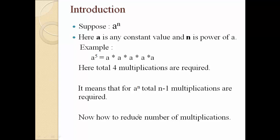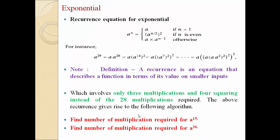But now, how can we reduce this number of multiplications by using the divide and conquer concept? Suppose we write a recurrence for any exponential like a raised to n. The recurrence of a raised to n will be: if n is equal to 1, return a. If n is even, return a raised to n by 2, whole raised to 2. Otherwise, return a into a raised to n minus 1.